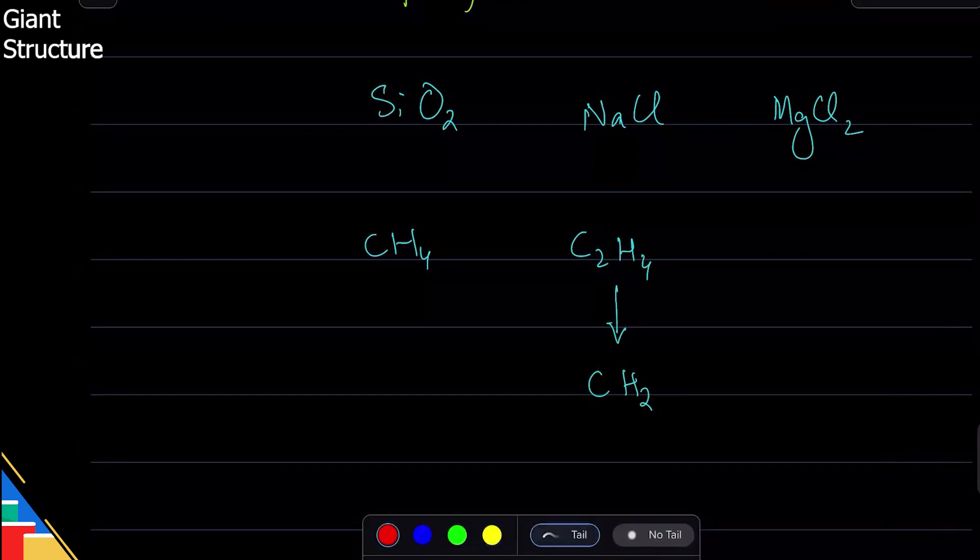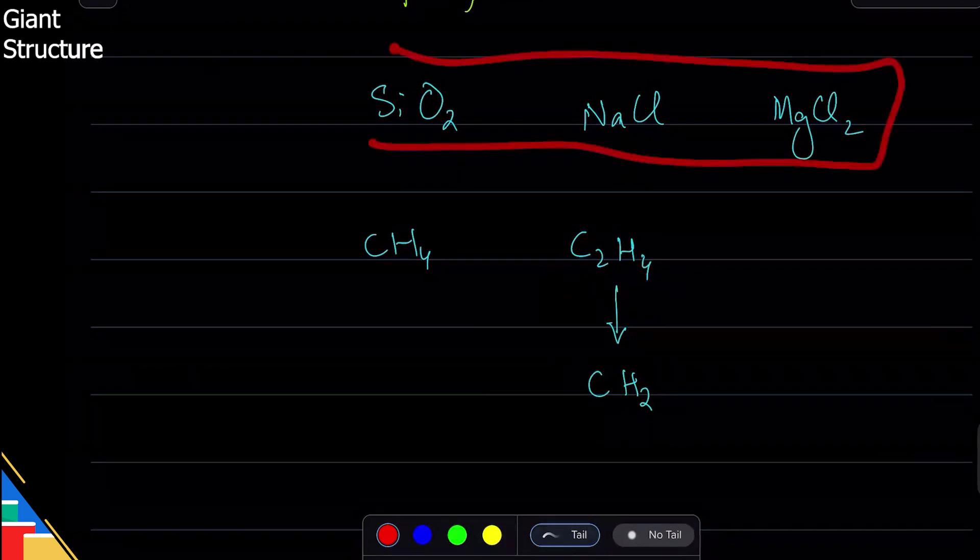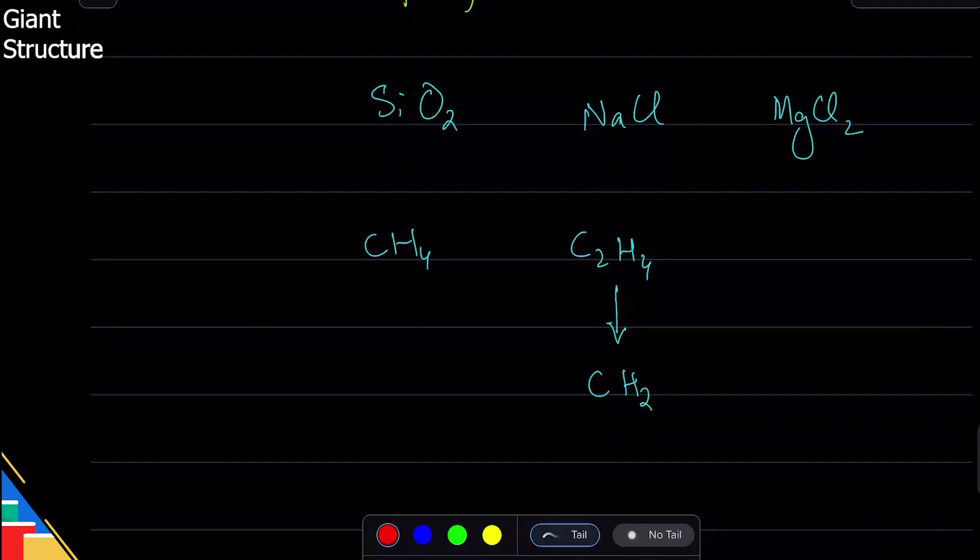And here you can see that molecular things can have molecular formula and empirical formula, but giant structures only have empirical formula. That is something you should know.